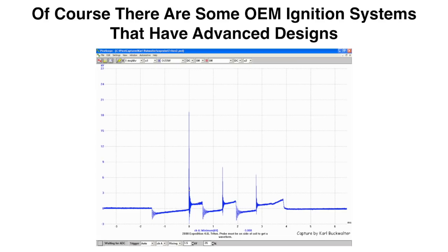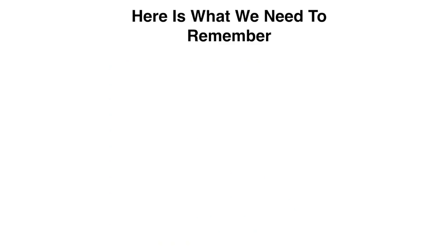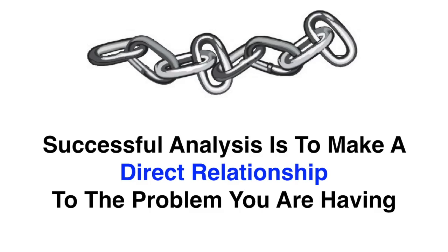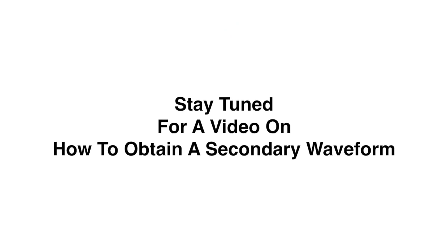Of course, there are some OEM ignition systems that have advanced designs, like the Ford multi-strike. These variations need to be covered separately. So here is what we need to remember: compare. Comparative analysis is the best way to determine if something is good or bad. Link the waveform with the symptoms — there should be a direct relationship to the problem you are having. We're going to do a video on how to obtain a secondary waveform. Thanks for watching.